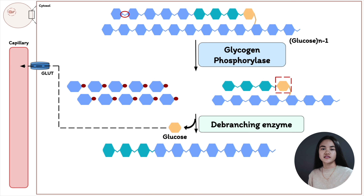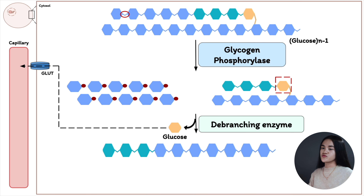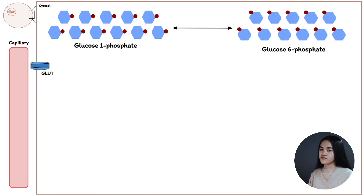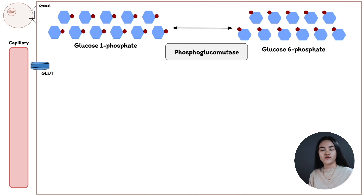Because only small amounts of free glucose are released, we need to produce and release more to meaningfully increase blood glucose concentration. So we turn to the glucose-1-phosphate molecules that were produced. These are transformed into glucose-6-phosphate by the enzyme phosphoglucomutase. This reaction is reversible — you can convert glucose-6-phosphate back into glucose-1-phosphate. Glucose-6-phosphate is also involved in many other metabolic pathways.